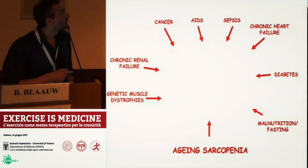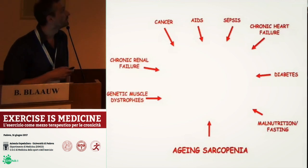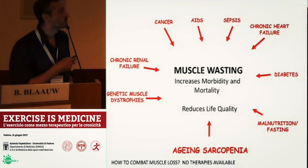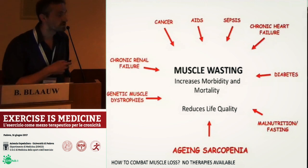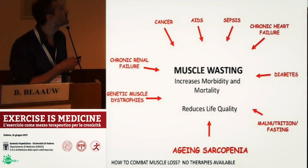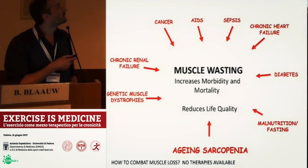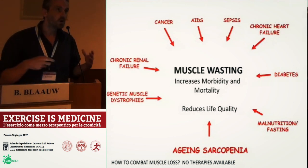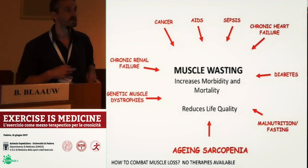Many different pathological conditions have in common that they have an increase in muscle loss — they have muscle wasting. So here we see a list ranging from genetic diseases to cancer cachexia, or chronic heart failure, diabetes — they all have in common that there is an important component of muscle wasting.